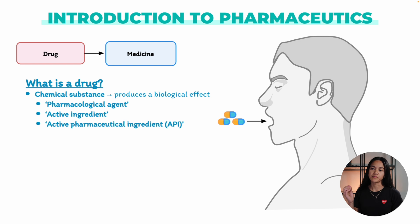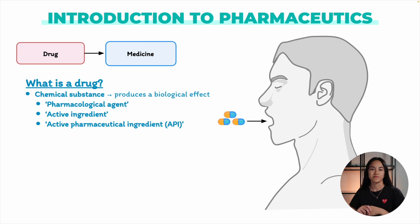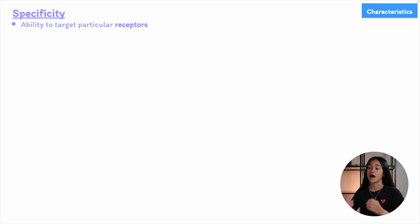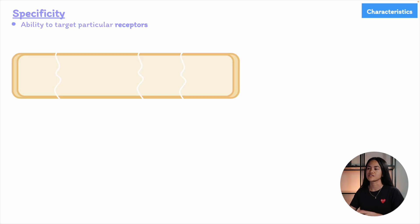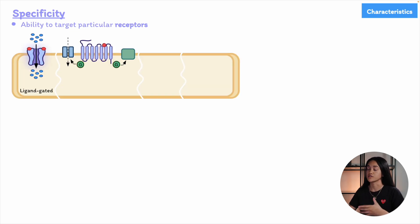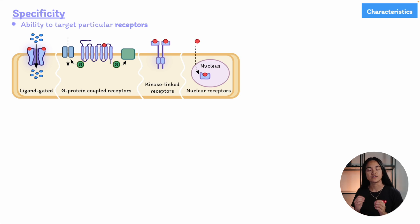APIs or active ingredients are the substances within a medication that produce the desired therapeutic effect. Now let's look at two key characteristics of a drug: specificity and potency. Specificity refers to a drug's ability to target particular receptors or biological molecules in the body.